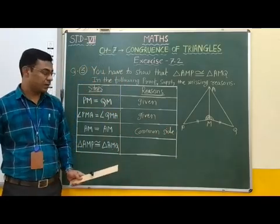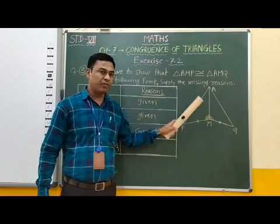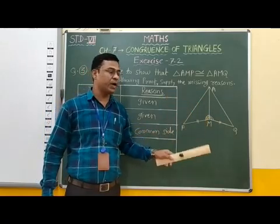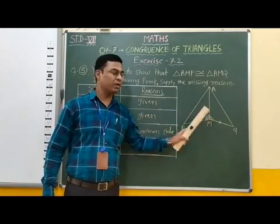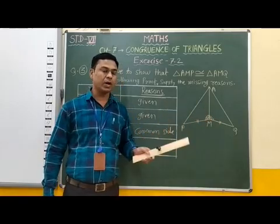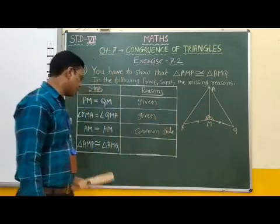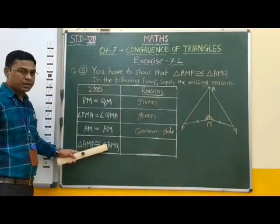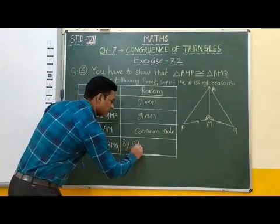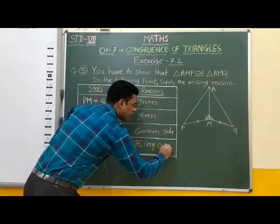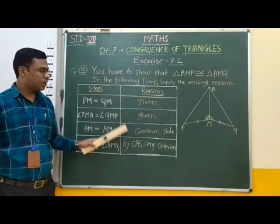If you observe, between these two triangles, two sides and the angle included between them of one triangle are equal to the corresponding two sides and included angle of the other triangle. Therefore, these two triangles are congruent by SAS congruence criteria. So the reason for this final step is: by SAS congruence criteria.